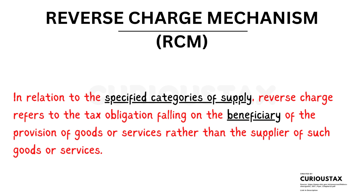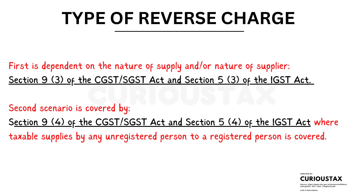The first type of reverse charge is under Section 9(3) of the CGST/SGST Act and Section 5(3) of the IGST Act, which is based on the nature of supply and nature of supplier. The second type is under Section 9(4) of the CGST/SGST Act and Section 5(4) of the IGST Act, which covers taxable supplies made by any unregistered person.